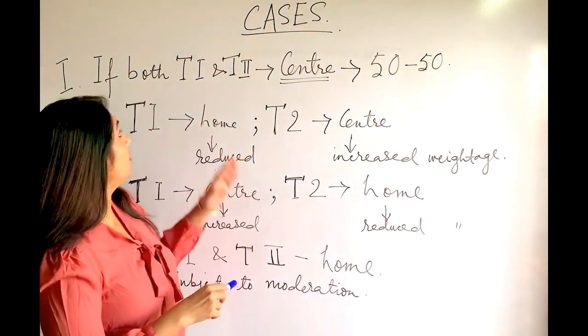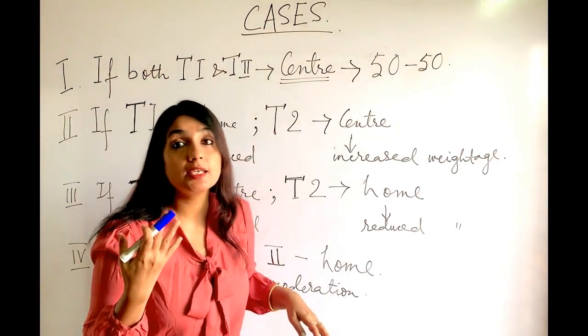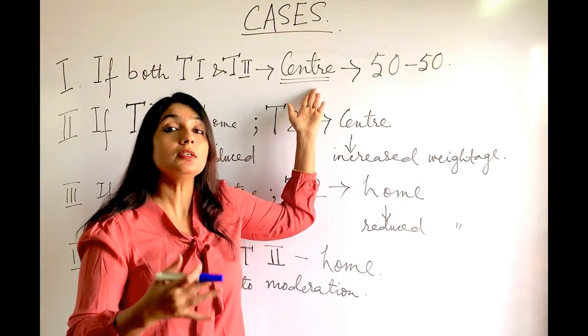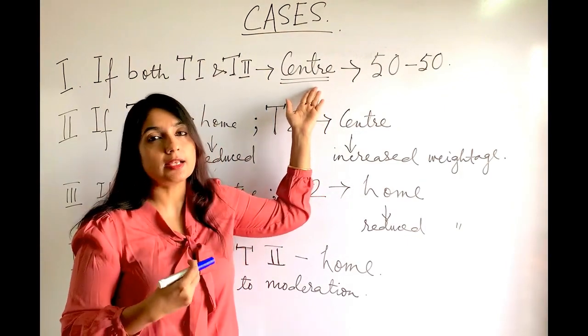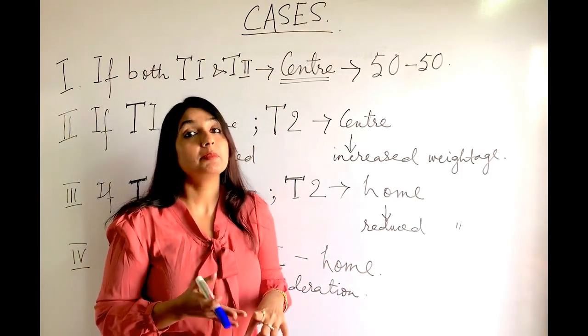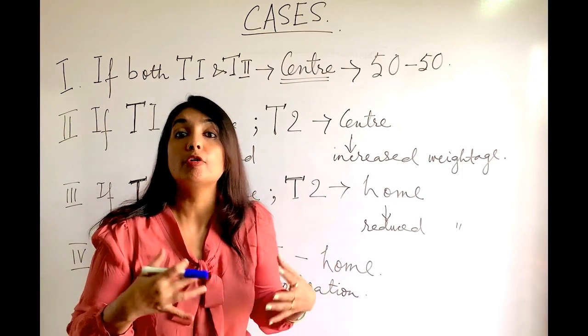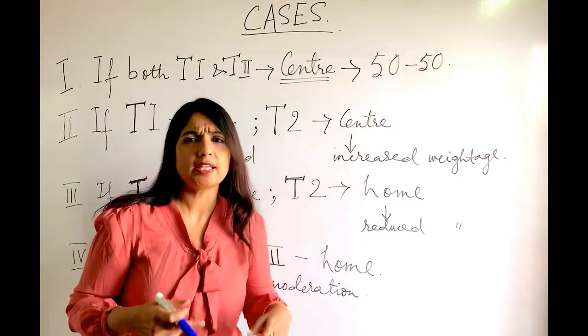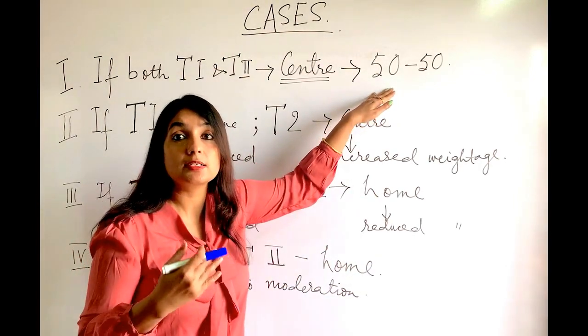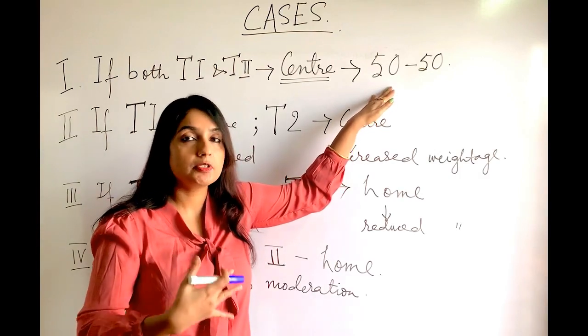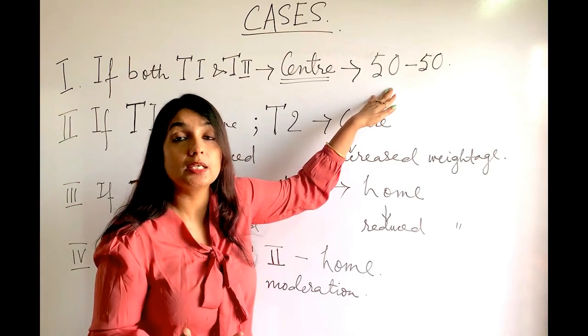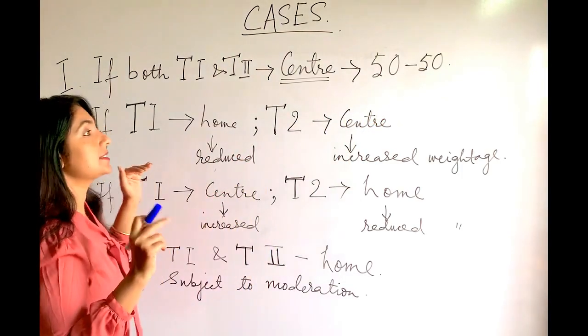First, CBSE says that if both T1 and T2 take place in the center—that is, the situation is very good, there is no pandemic, and both Term 1 and Term 2 can be held offline in the center or school (CBSE will decide)—in that case, the weightage of Term 1 and Term 2 will be equal: 50% of Term 1 and 50% of Term 2. What is the second case?